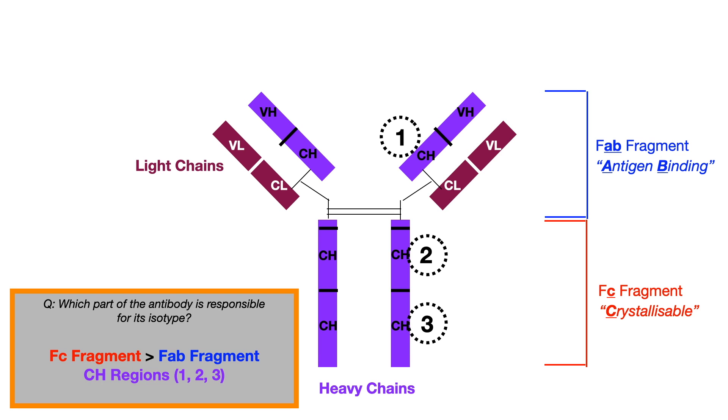And so, I know lots of you are probably sitting at home and you're like, whoa, whoa, whoa, dirty. Hey, it's my understanding that the FC fragment determines the isotype. And you would be correct. However, it is very important to understand that the constant heavy chain, which technically is in the FAB fragment, also contributes to isotype determination, because it's constant. It's not variable.